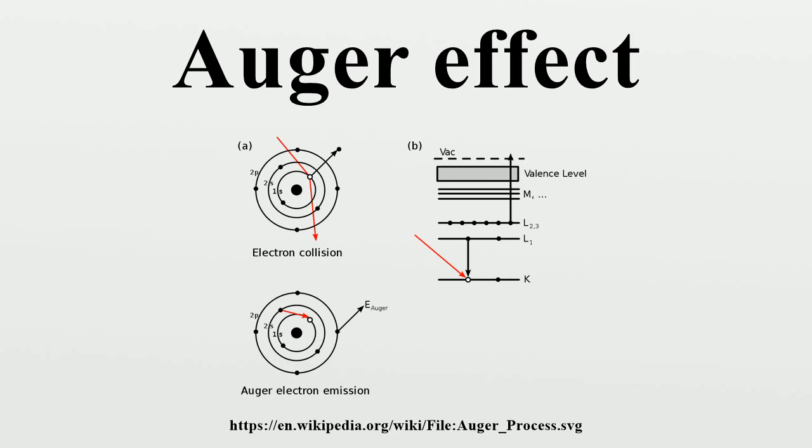Upon ejection, the kinetic energy of the Auger electron corresponds to the difference between the energy of the initial electronic transition into the vacancy and the ionization energy for the electron shell from which the Auger electron was ejected. These energy levels depend on the type of atom and the chemical environment in which the atom was located.